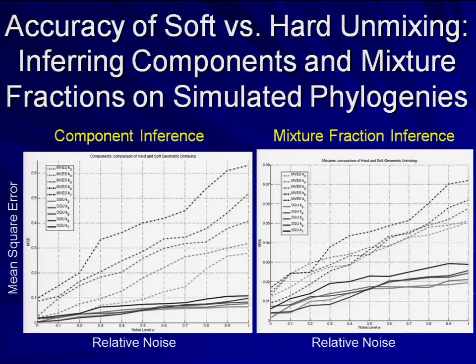The bottom line is that soft unmixing yields a huge improvement relative to hard unmixing. We created synthetic data sets — mixtures of known components — and we can infer what the components are. The hard unmixing has much more error in those inferences, while the soft approach fits the data much more cleanly.